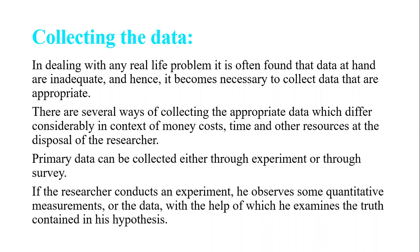Primary data can be collected either through experiments or through survey. If it is a scientific method then it becomes an experiment, and if it is a social research then it becomes a survey method. The researcher conducts an experiment and observes some quantitative measurements.